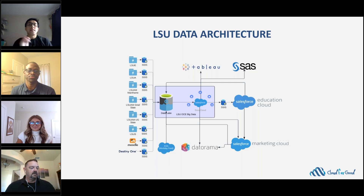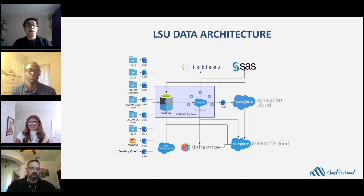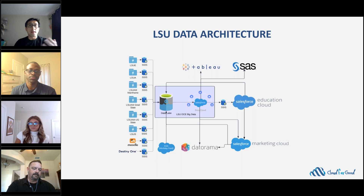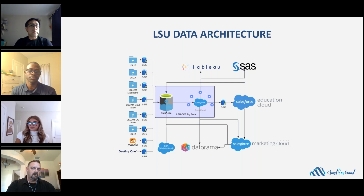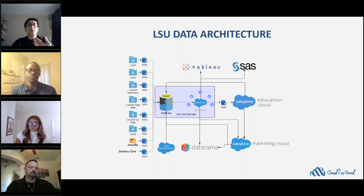A data architecture diagram like this tells you a lot of important information. As part of the architecture exercise, it tells you where the data comes from — all the sources on the left — and where we store the data: the data lake, Education Cloud, Marketing Cloud, and various databases, each with awareness of Data Cloud with its purpose and strength.